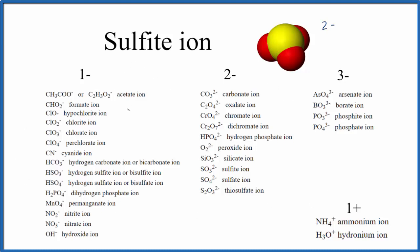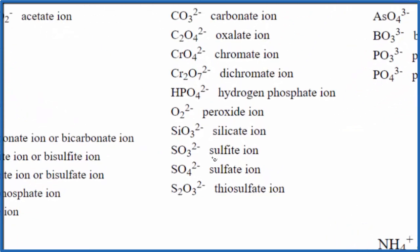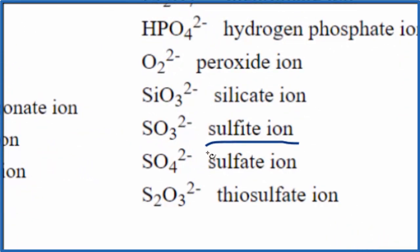So we have a table of polyatomic ions here and as we look down our list, right here is the sulfite ion SO3 2-. So the chemical formula for the sulfite ion is SO3 2-.